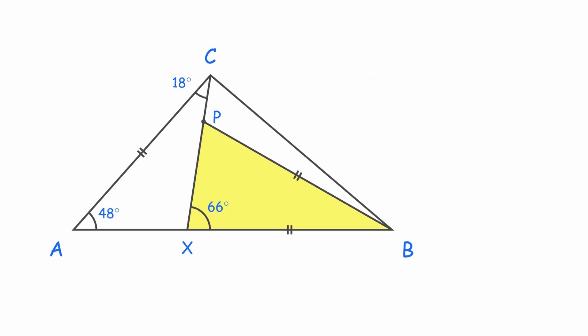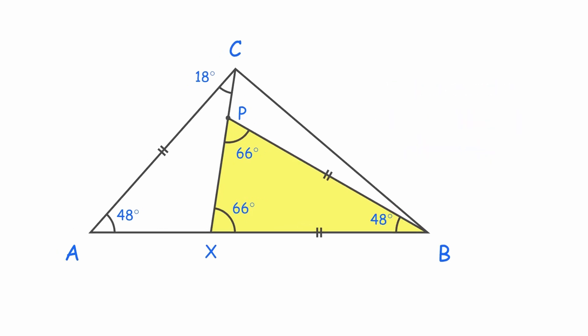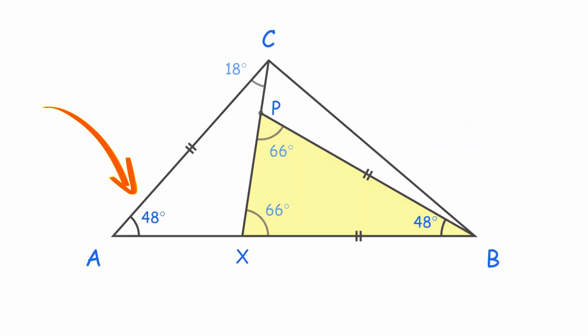Since BP equals BX, triangle PBX is isosceles. So angle XPB is also 66 degrees. That means angle PBX is 48 degrees. Wait a second, that's the same as angle A.